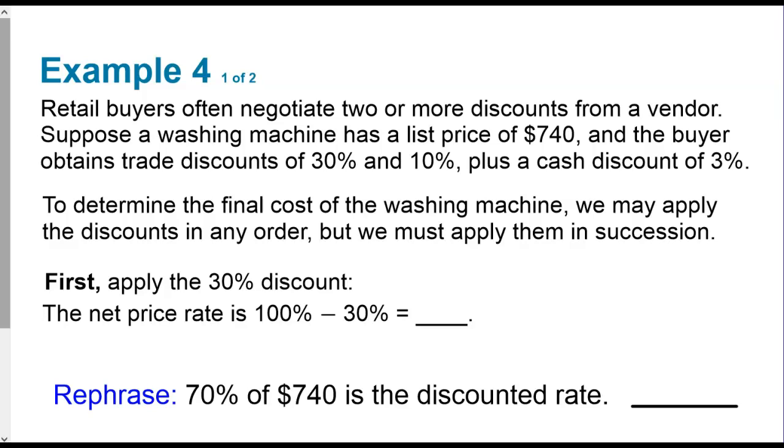And so remember, you always want to subtract what it is that you are getting the discount from. So that's key with discount. In this case, there's a washing machine. It's a list price of $740. And the buyer gets a trade discount of 30% and then another 10% on top of that, plus a cash discount of 3%. So to determine the final cost of the washing machine, we just apply these discounts. We can do it in any order that we want, but we have to make sure that we do it in succession and using the last calculation.